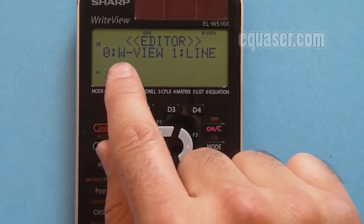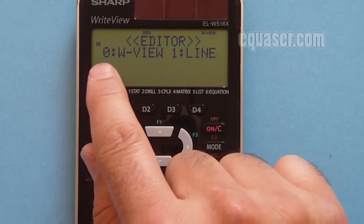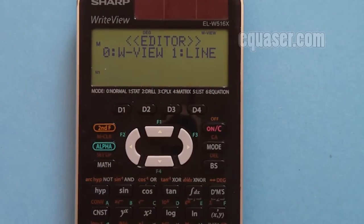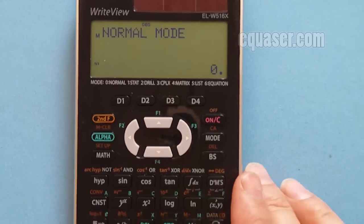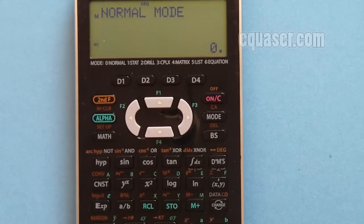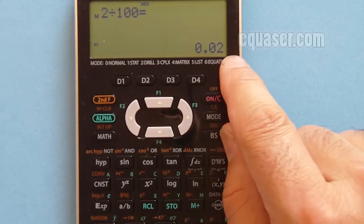As you can see, WriteView is the original function by default, but I want to press 1 to make it a line. Now if I divide it by 100, as you can see it has changed to decimal without pressing the change button.